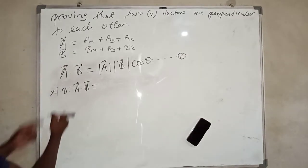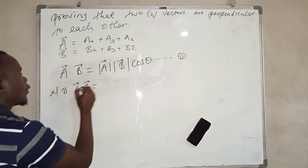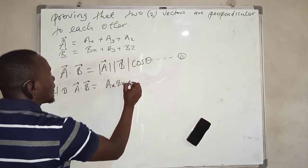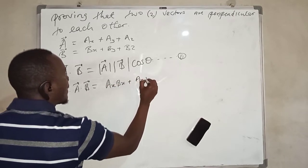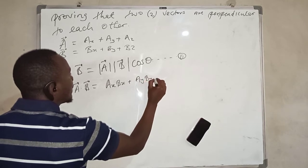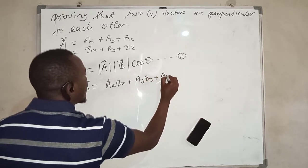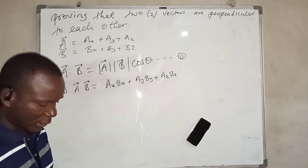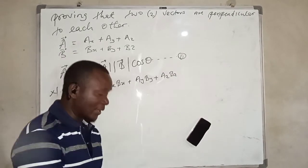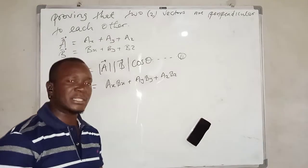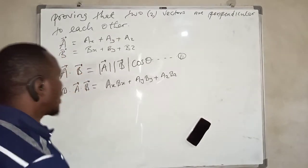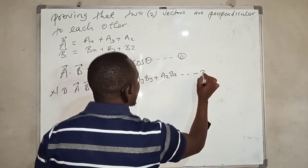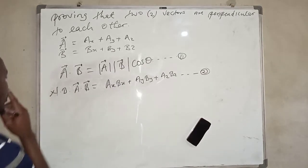From the left side, a dot b is also equal to ax*bx plus ay*by plus az*bz. That is, we multiply the corresponding components in x, y, and z respectively. Let us call this equation two.